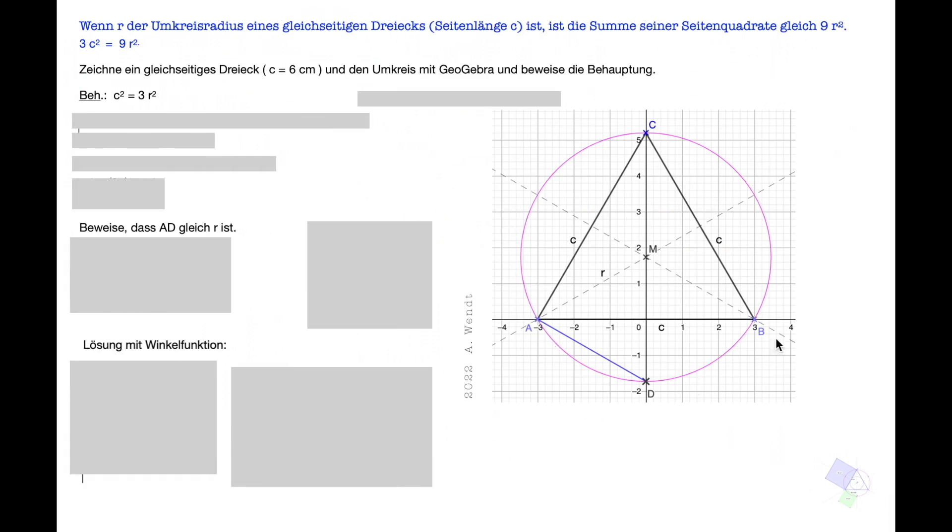So könnte eure Zeichnung etwa aussehen. Ich habe das hier ein bisschen anders gezeichnet, aber im Grunde braucht ihr ja nur die Seite AB mit 6cm zu zeichnen. Von A aus schlagt ihr einen Kreisbogen mit 6cm und von B auch einen Kreisbogen mit 6cm. Dann verbindet ihr A mit C und B mit C und dann habt ihr das gleichseitige Dreieck.